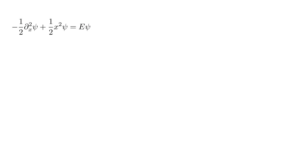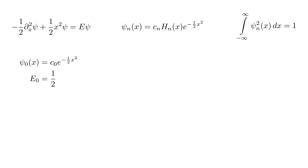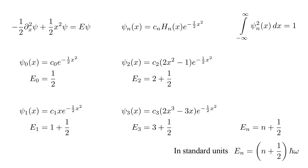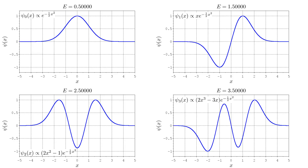The Schrödinger equation can be solved analytically. The n-th wave function has the form of a constant c-n times a polynomial h-n times a bell-curve exponential, where the constants are fixed by the condition that the sum of the particle probability over all x values is 100 percent. The lowest energy is one-half. The next energy is one plus one-half. And so on. The n-th energy level is n plus one-half. In standard units, the n-th energy level is n plus one-half times h-bar omega. Here are the first four wave functions, with energies one-half, one-and-one-half, two-and-one-half, and three-and-one-half.